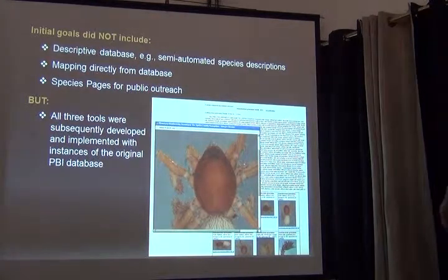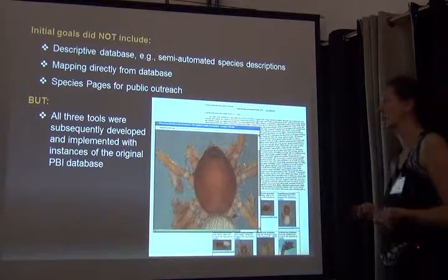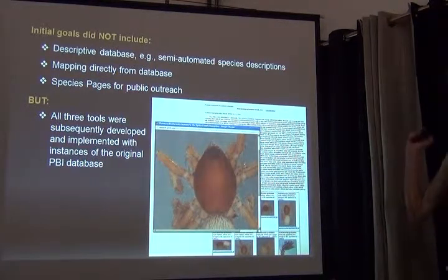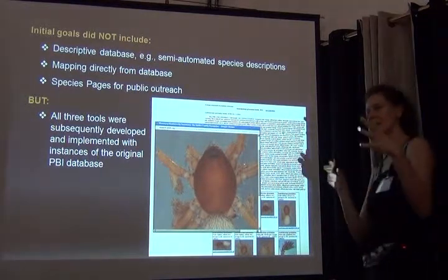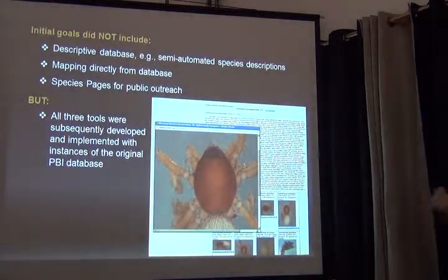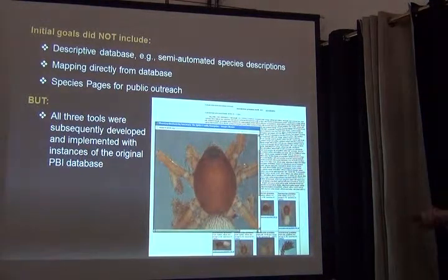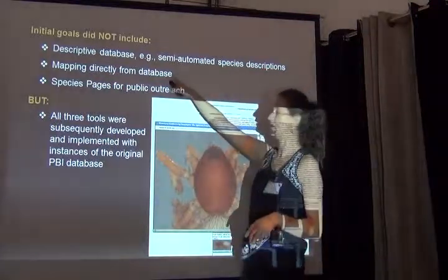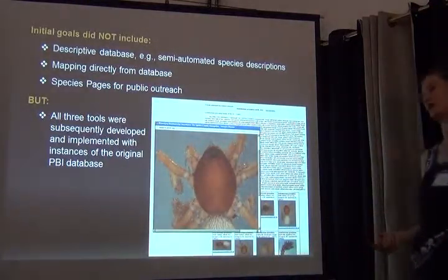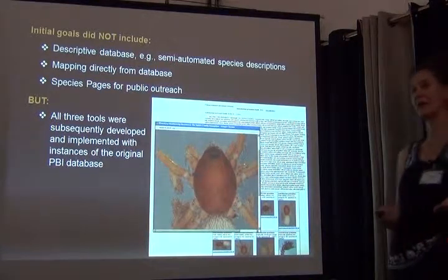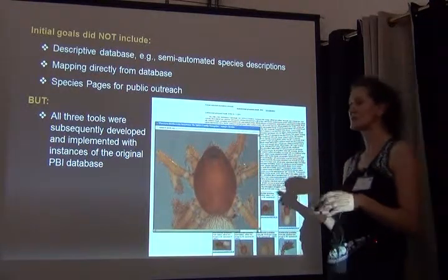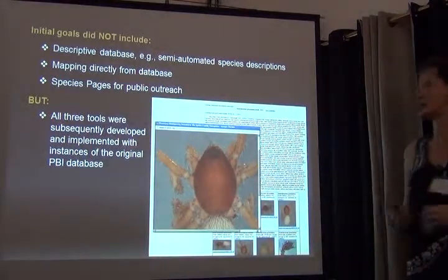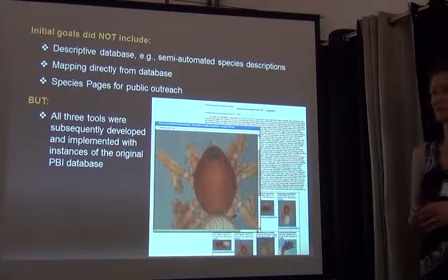Our initial goals did not include building a descriptive database — something fully customized to not only handle specimen information but also allow you to write species descriptions directly from a database. We didn't do that, but other projects that started using the database actually ended up doing that. We also didn't envision mapping specimen locality information directly from the database, but in the end we did develop these tools, and there were certain advantages. Species pages were similarly something we thought would come through data aggregators, but again this happened as a byproduct of other projects.